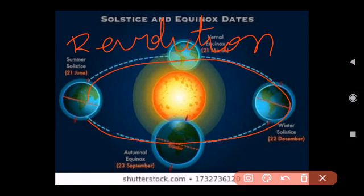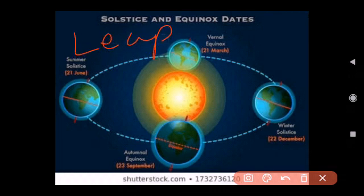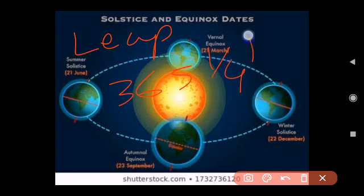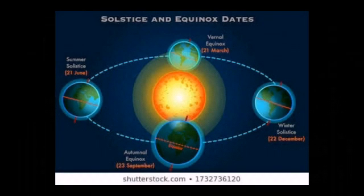Elliptical means oval in shape. The movement of the Earth around the Sun is called revolution, and the Earth takes 365 and one-fourth days to complete one revolution. Regarding the leap year: after every four years, one extra day is added in the month of February. In reality there are 365 and one-fourth days in a year; the one-fourth day (six hours) is counted as one full day after every four years.